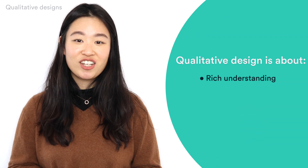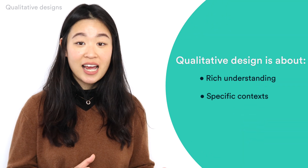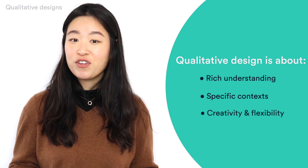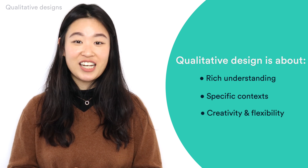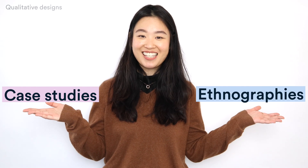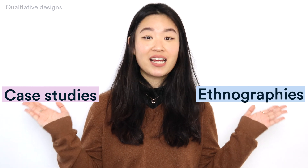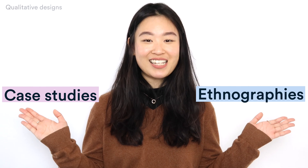So those are the main types of quantitative research design. But what if you're doing qualitative research? Qualitative designs tend to be a bit less rigidly defined. This approach is about gaining a rich, detailed understanding of a specific context or phenomenon, and it can often be more creative and flexible. Two common types of qualitative design are case studies and ethnographies, both of which involve taking a deep dive into a narrowly defined subject.